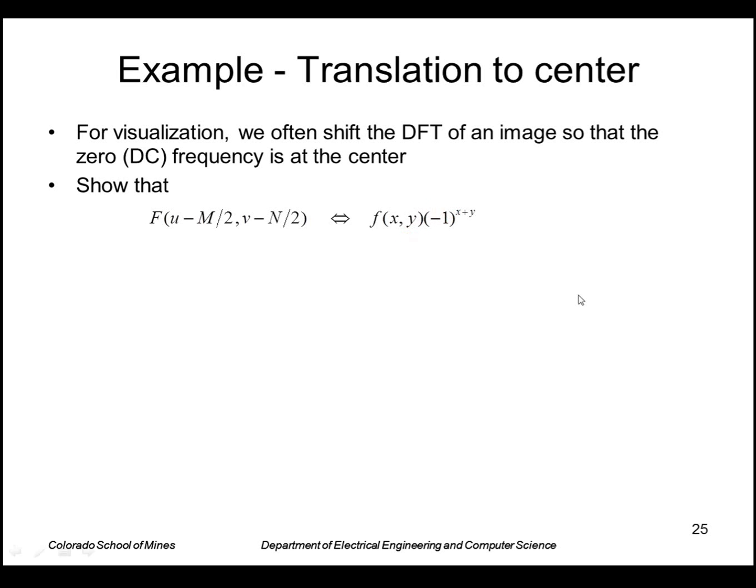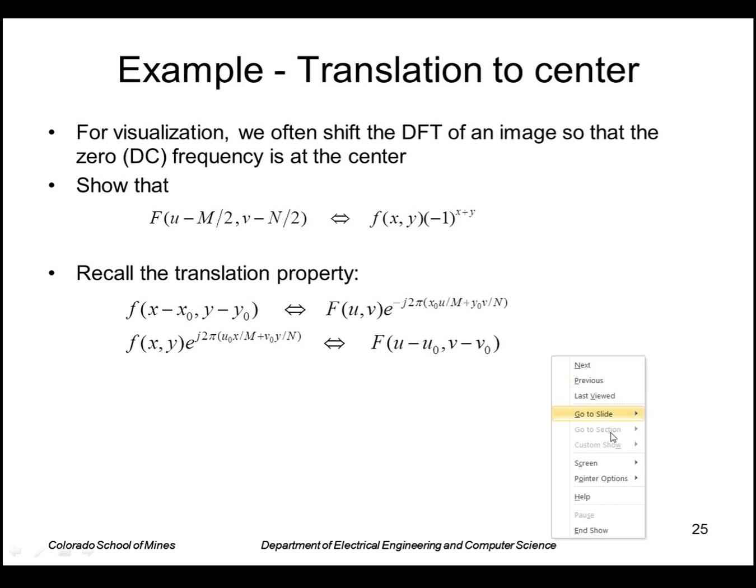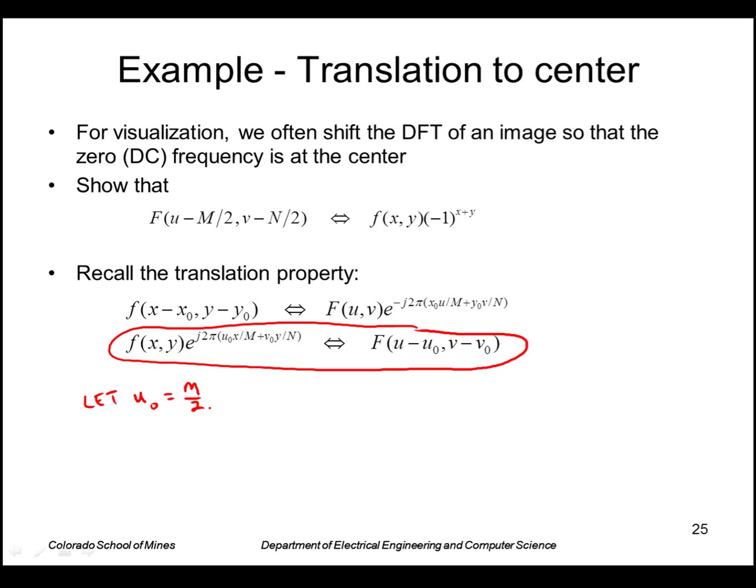To see that, we can use the translation property. In this case, we'll use shifting the Fourier transform and seeing what effect that has. So let u_0, the amount we shift by, be M/2, and v_0 be N/2. So the Fourier pair of F(u-u_0, v-v_0), according to the translation property, is f(x,y)e^(j2π(M/2)(x/M) + (N/2)(y/N)).